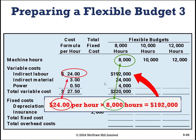From there we take our flexible budgets, which give us a range. What happens when we have 8,000 hours? What happens at 10,000? What happens at 12,000? We look at 8,000 times $24 and that drives our total costs. Then we take our units times our indirect material rate to get those costs, and so on at each budgeted activity level.